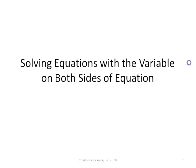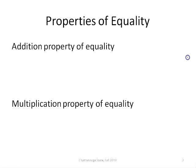Solving equations with a variable on both sides of the equation. When we solve equations, we use two properties: the addition property and the multiplication property. The addition property says we can move a term to the other side by adding or subtracting the same thing on both sides. The multiplication property says we can divide or multiply both sides by the same thing.